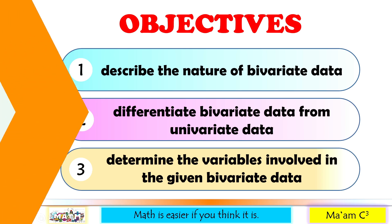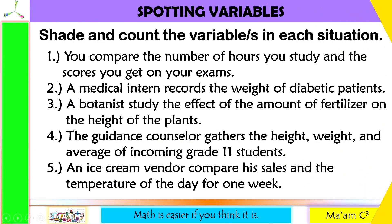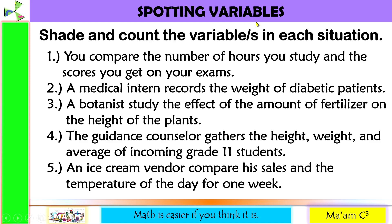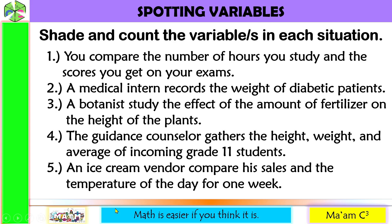Let's have a quick activity called Spotting Variables. A variable is named as such because the value of it may vary. It is any characteristic, number, or quantity that can be measured or counted. Can you spot the variables in each situation? Let us shade and count the variables in each item here.